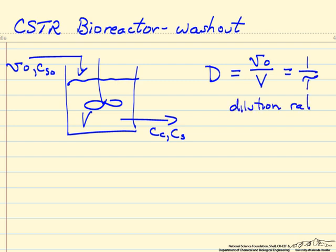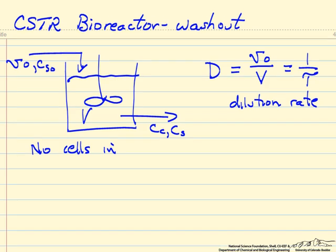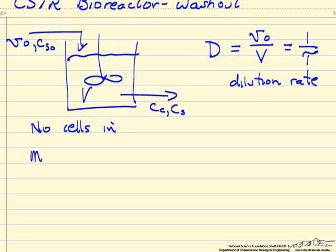We want to find what dilution rate we need before we have washout — namely, we wash the cells out. A couple of things to notice: we're feeding a substrate with concentration CS0, and the substrate leaving has a lower concentration. We're not feeding any cells, so there are no cells in but there are cells leaving. This means we had to initiate the reactor by starting with cells in order to be making cells at the exit, but then we can run it at steady state without feeding in cells.